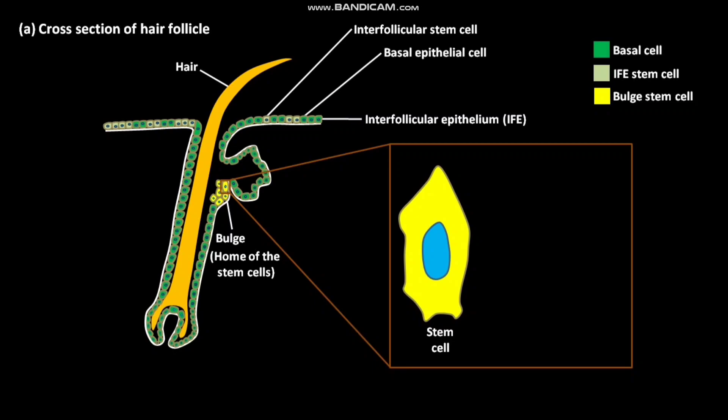The progeny of stem cells in the bulge migrate down to contribute to hair formation near the dermal papilla. The dark green colored basal cells have yet to begin terminal differentiation. These dark green colored basal cells are transient amplifying cells, which are still dividing.